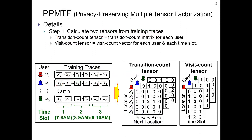Now I explain the details. First, we calculate two tensors from training traces. The first tensor is a transition count tensor, which is a transition count matrix for each user. In this example, user U1 has one transition from X2 to X3, so the corresponding element is 1. The second tensor is a visit count tensor, which is a visit count vector for each user and time slot. In this example, user U1 visits X2 and X3 in time slot 1, so the corresponding elements are 1.